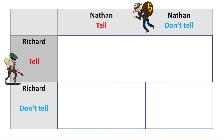So there are four possible outcomes here. First, upon hearing the deal, Richard decides to tell. The detective presents the same deal to Nathan and he decides to tell as well. In this instance, they are both sentenced to three years in prison each.